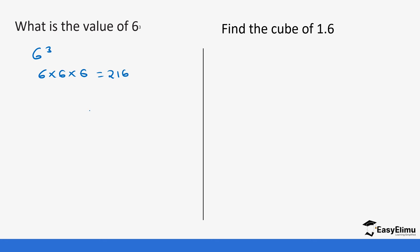Next, find the cube of 1.6. This means you take 1.6, multiply by 1.6, then multiply by 1.6 again. So it is 1.6 times 1.6 times 1.6, which gives you 4.096. Basically, you are multiplying the number by itself three times.